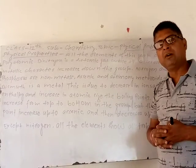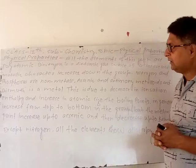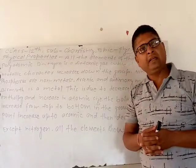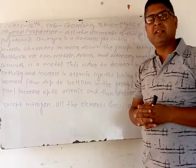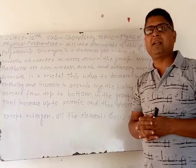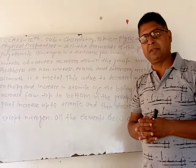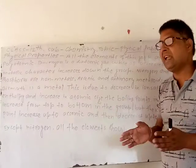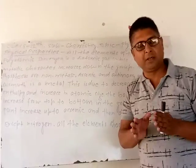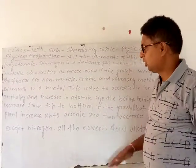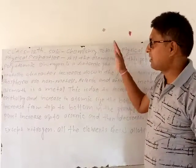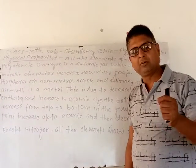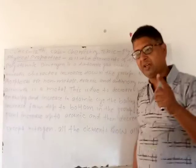All the elements of Group 15 — nitrogen, phosphorus, arsenic, antimony, and bismuth — represent allotropic forms. Each element in Group 15 denotes its own allotropic form.